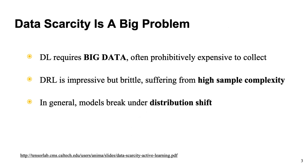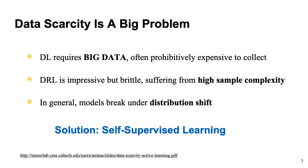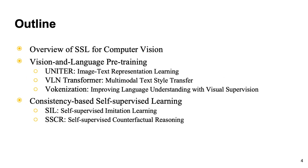Self-supervised learning can be a very effective solution to tackle data scarcity and distribution shift issues, as it utilizes learning signals inherent in the data itself and goes beyond supervised learning. In this part, I will present the most recent advances of self-supervised learning for language and vision.